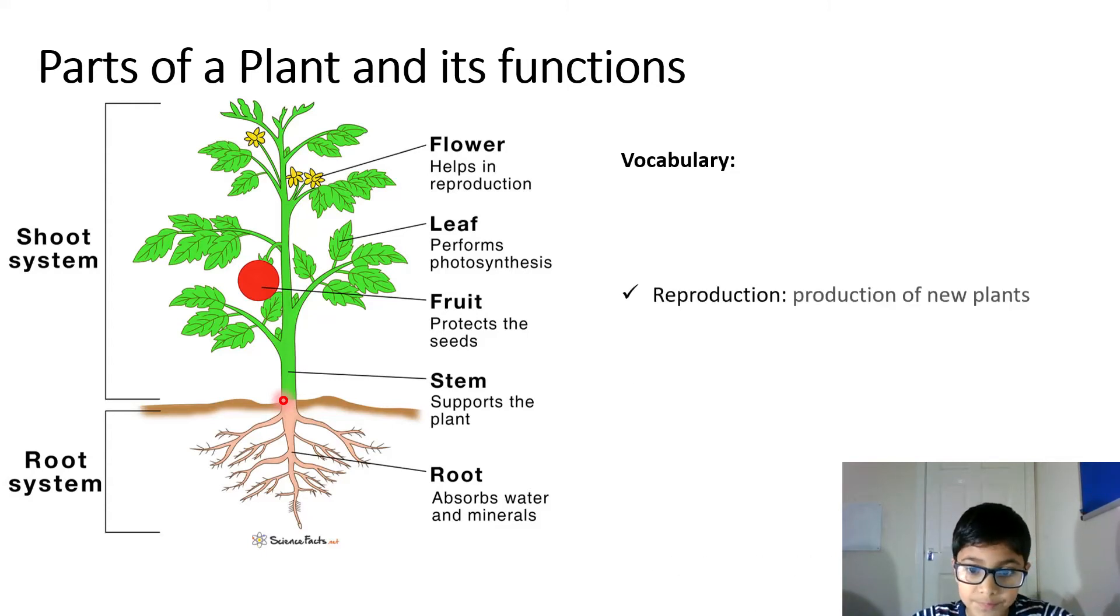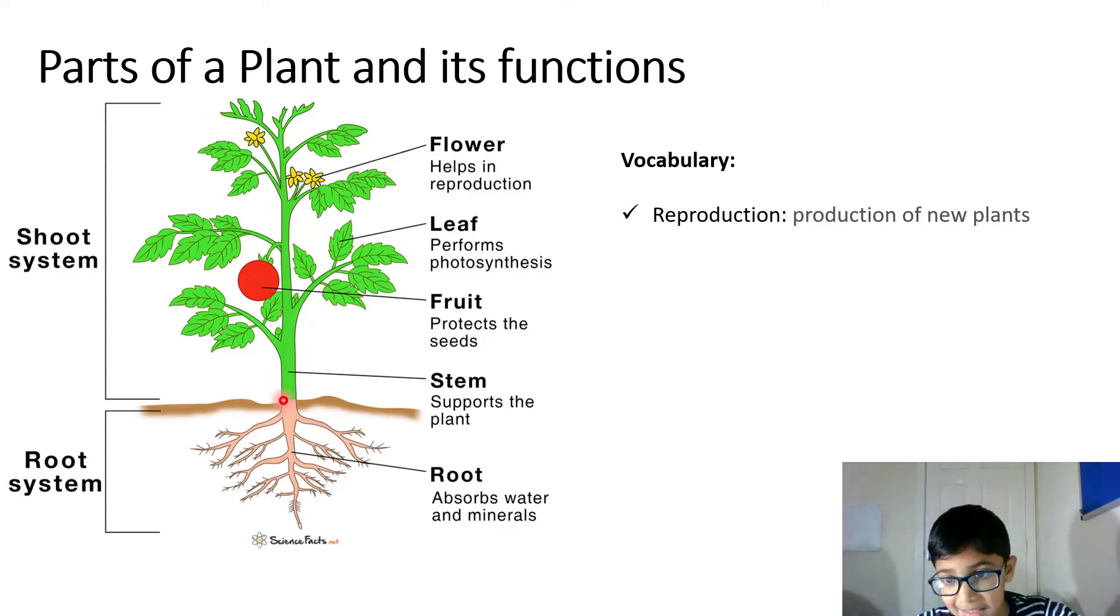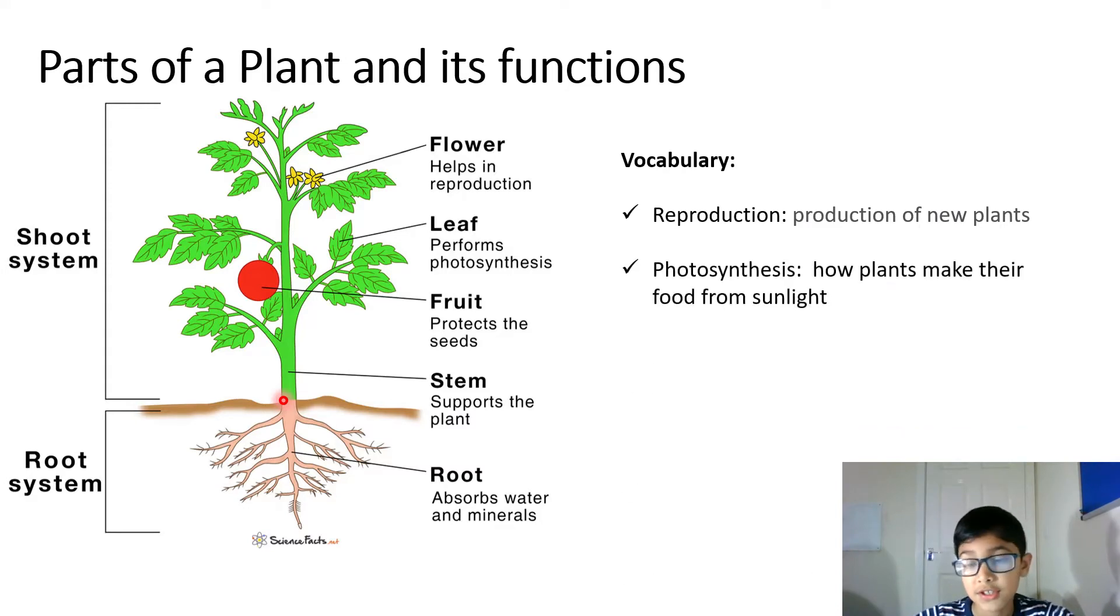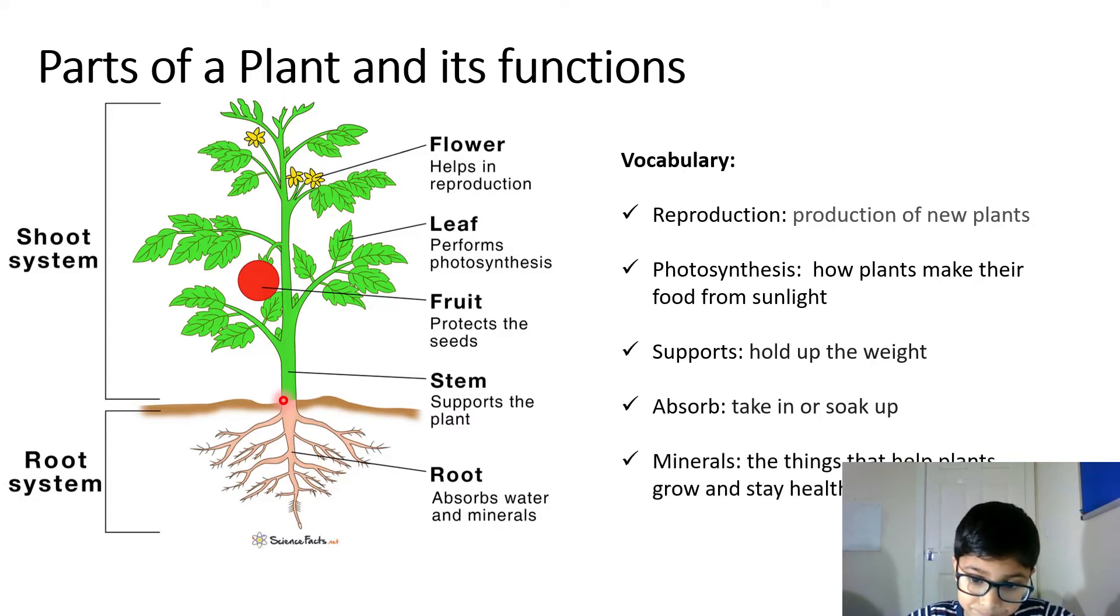Vocabulary. Reproduction: production of new plants. Photosynthesis: how plants make their food from sunlight. Support: holding up the weight. Absorb: take in or soak up. Minerals: the things that help plants grow and stay healthy.